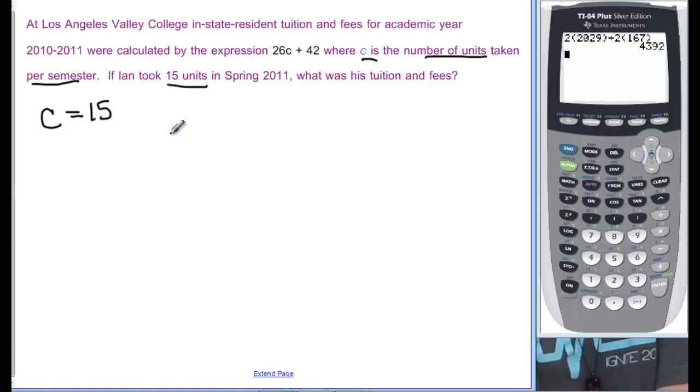So when we rewrite this problem, we have 26 times 15, the number of units, plus 42. And I'm just going to go right over here to my calculator. 26, parentheses, 15, close the parentheses, exactly like I see it. I don't really have to have those parentheses, but it doesn't hurt. And that's equal to 432. And what was his tuition and fees? That means it's in dollars. So this would be 432 dollars.